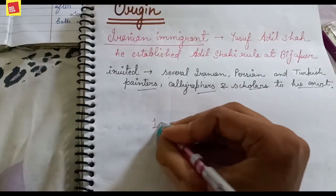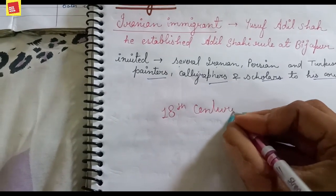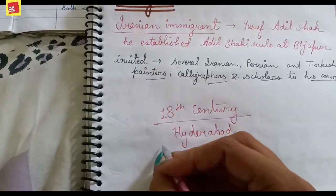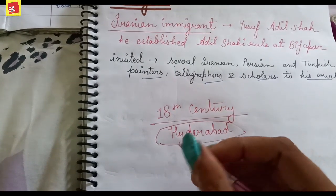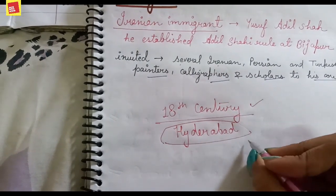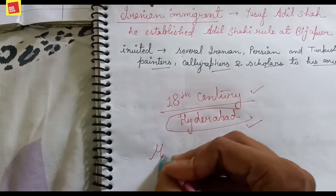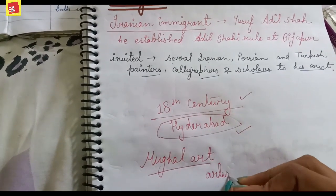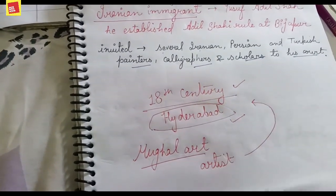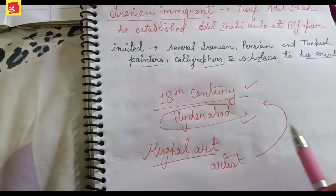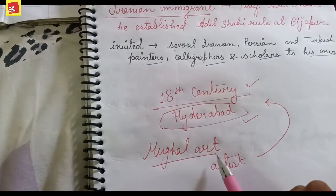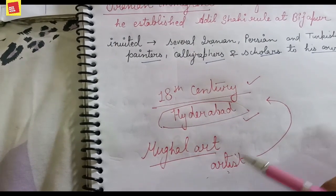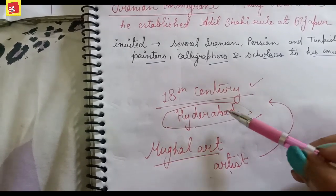In the 18th century, the kingdom of Hyderabad began to develop and another form of Deccani art came into existence. Many artists from the Mughal school — which we studied earlier — started migrating to Hyderabad during the period of Aurangzeb, who destroyed many paintings. The artists faced hardship and so they migrated to Hyderabad and started their own distinct culture of Deccan School of Miniature Painting.